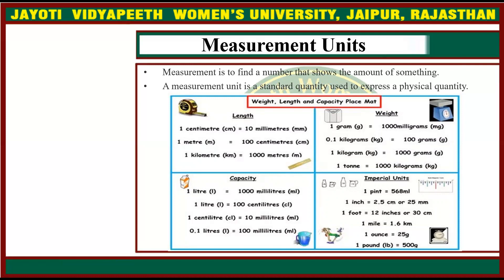This is basically used for the conversion of one unit to another. For example, if a cloth is 100 meters long, to convert it into centimeters, simply multiply 100 meters by 100 centimeters per meter. For weight: 1 gram equals 1000 milligrams, 0.1 kilograms equals 100 grams, 1 kilogram equals 1000 grams, and 1 ton equals 1000 kilograms.